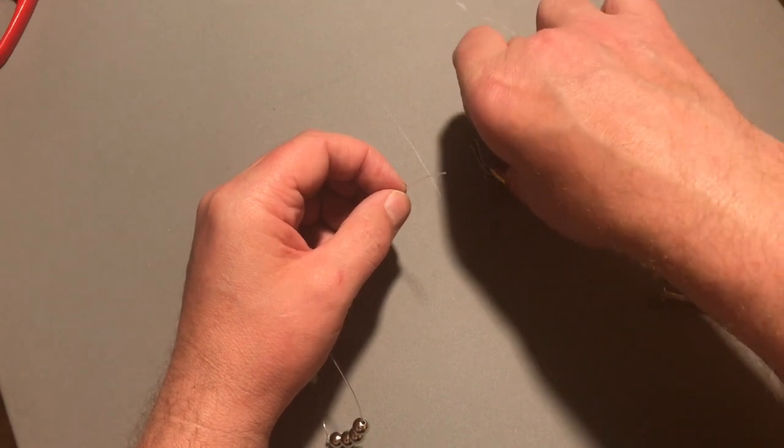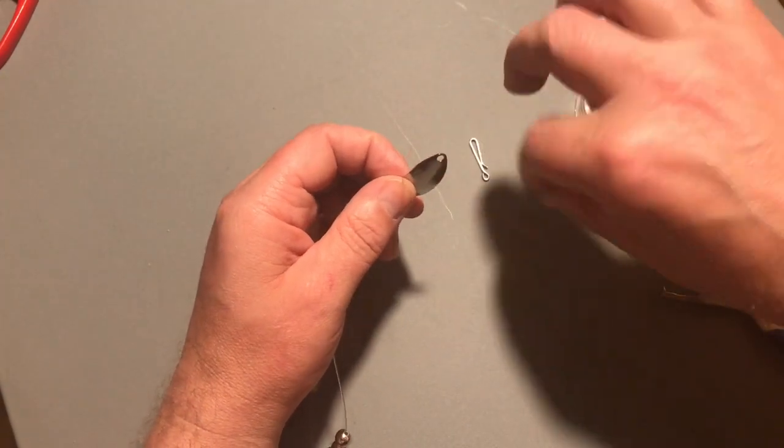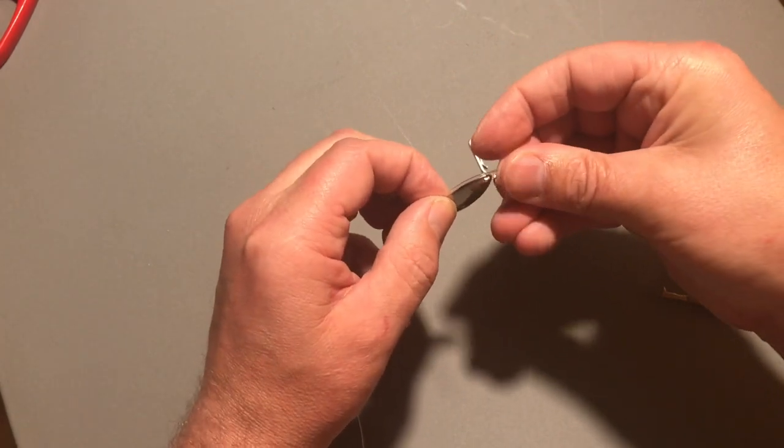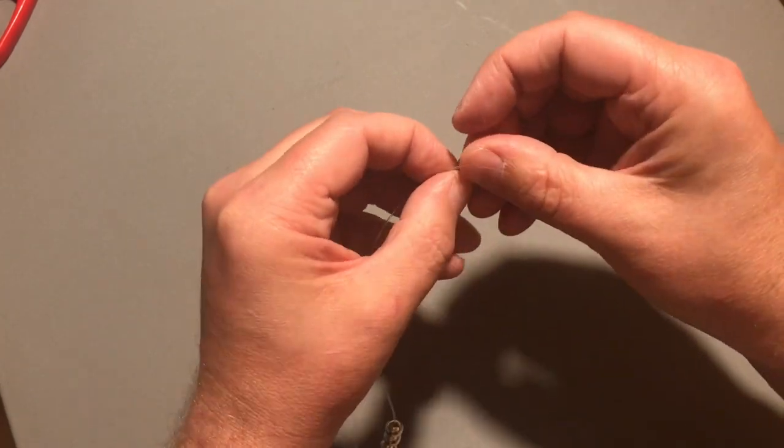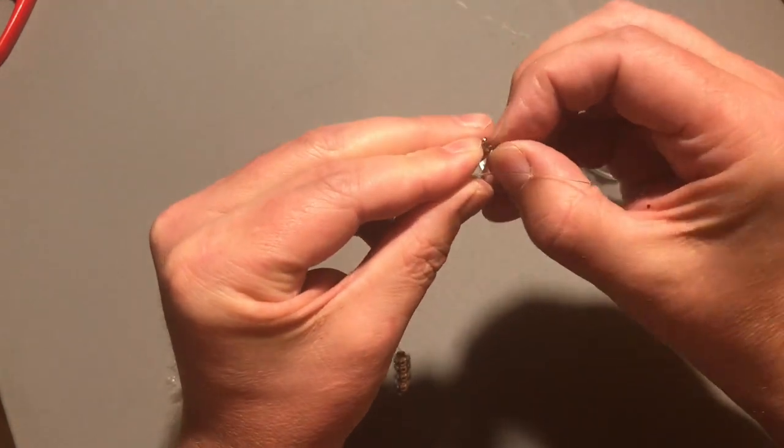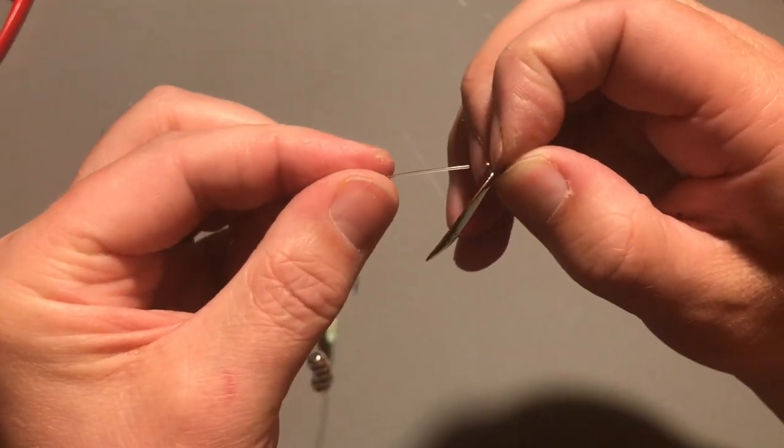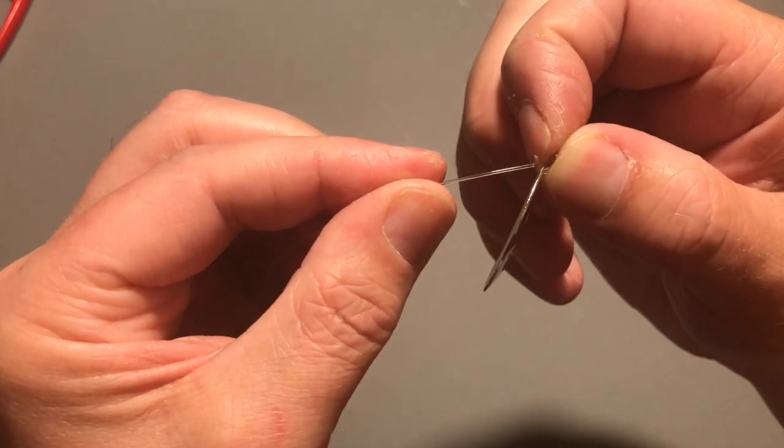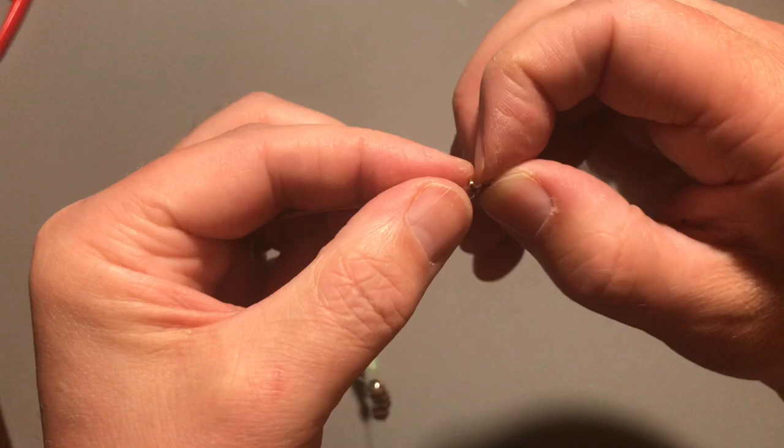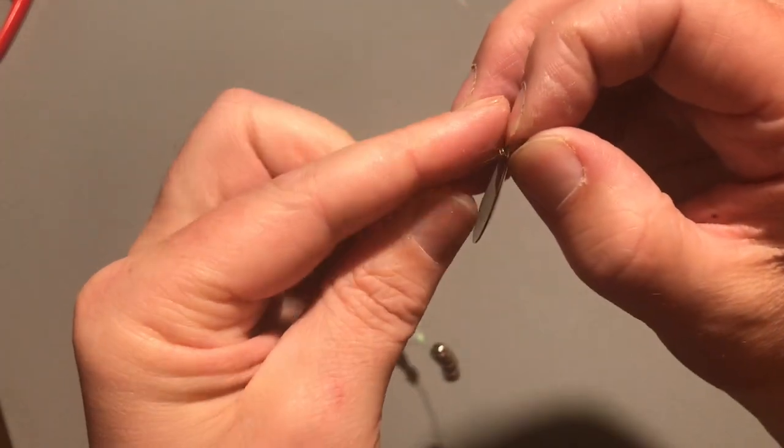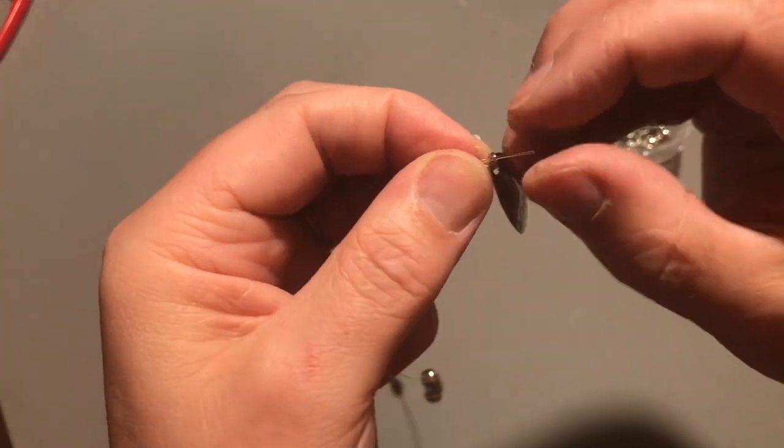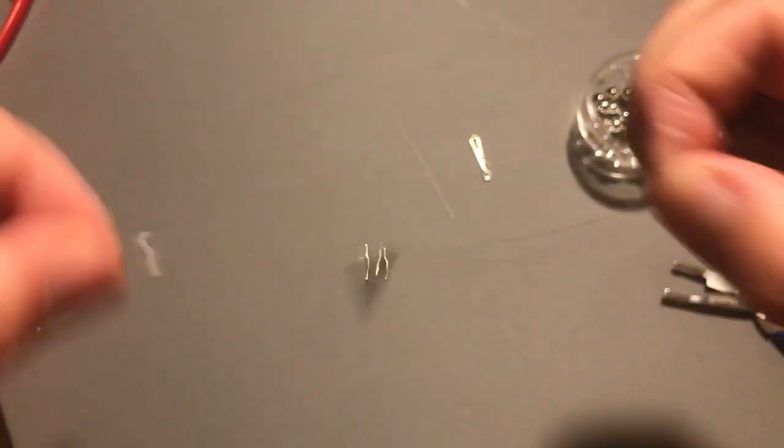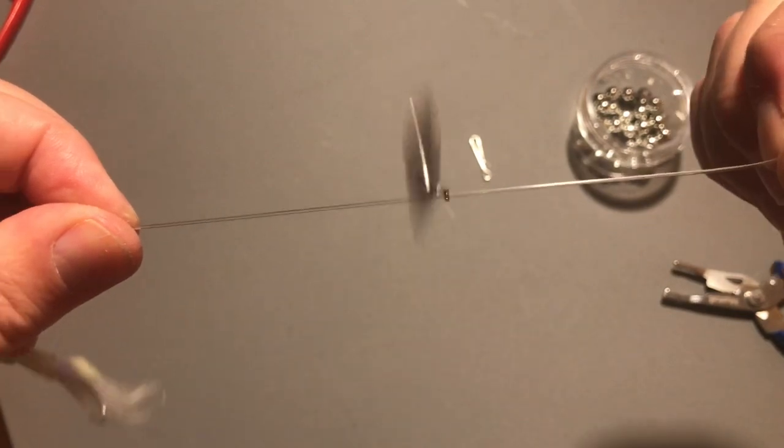Then attach your spinner blade or spoon with your clevis so that it runs through and it can spin easily round your line.